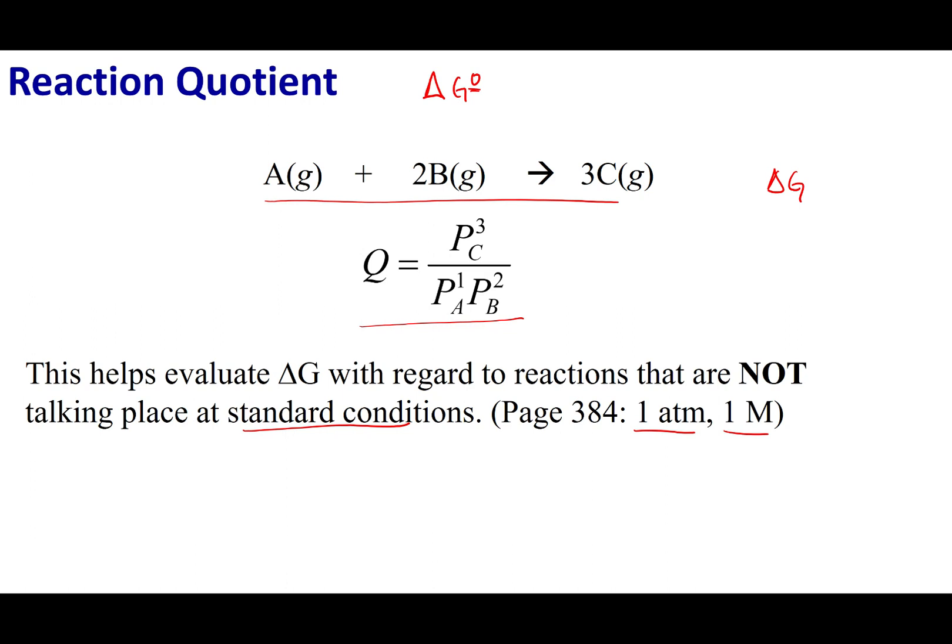Now, what we can do is we can use Q to evaluate the delta G of our reaction. Now, I'm going to give you this equation on your information sheet. The derivation of this is beyond the scope of this class. But let me explain what the equation does. I'm going to find delta G, and that means that it can be at any concentration and any pressure. And delta G is going to be based off delta G naught, where everything is under standard conditions, which you have data for in the back of your book or on tables. Now, added to this delta G naught is this term right here, RTLNQ,